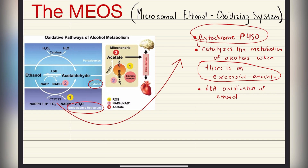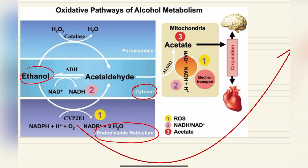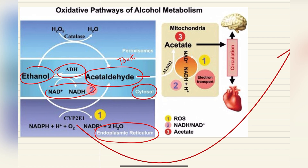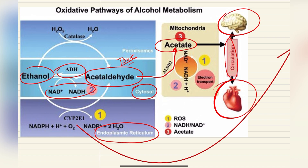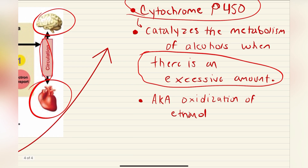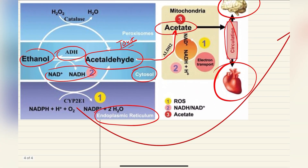This is also known as oxidation of ethanol. Just another recap: we have ethanol, metabolized by ADH through NAD+ getting converted into NADH. After alcohol dehydrogenase metabolizes ethanol, we get acetaldehyde — the toxic stuff. From there, we have acetaldehyde dehydrogenase, which converts the acetaldehyde into acetate, and that will be used for other processes in the body like circulation to the brain or to the heart. In excessive amounts, we have CYP2E1 — also the cytochrome P450 — that occurs in the endoplasmic reticulum, where the ethanol will be metabolized by a separate enzyme.